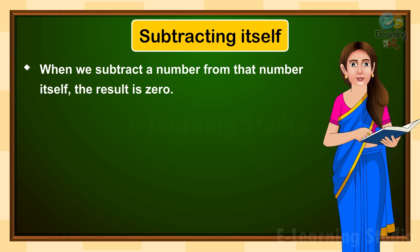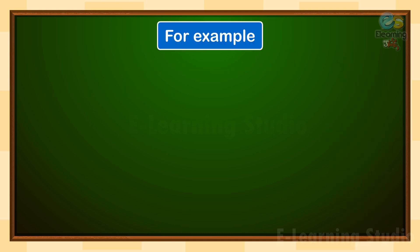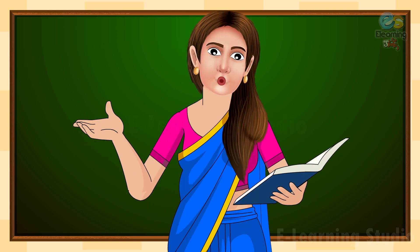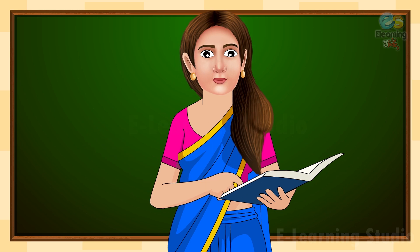When we subtract a number from that number itself, the result is zero. For example, 56 minus 56 is equal to zero. It means when we subtract 56 from 56 we get zero. In another example, when we subtract 246 from 246 we get zero. So in this property, when we subtract a number from itself, we get zero.